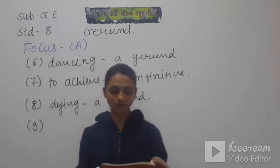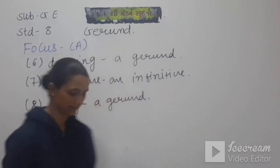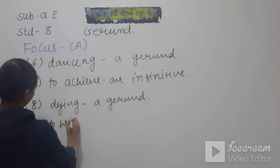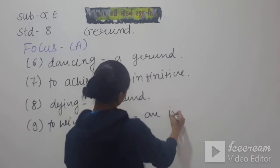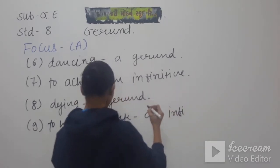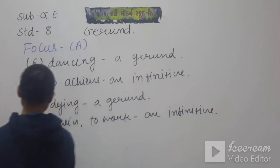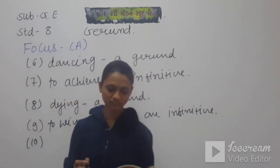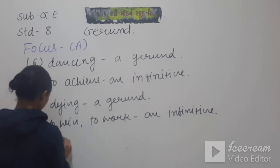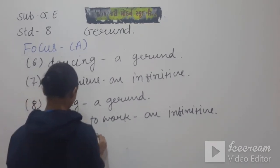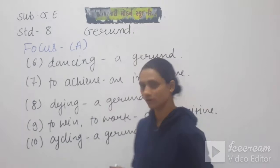Number nine: if we want to be in the competition we need to work harder. Two words are bold here, that is 'to be' and 'to work', and it means both are infinitive. Number ten is: cycling on the busy street is not a great idea. 'Cycling' - what is that? That is gerund. So this is Focus Exercise A and these are your answers of that exercise. Now we will go for Practice Exercise A.